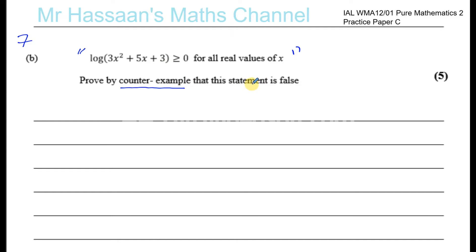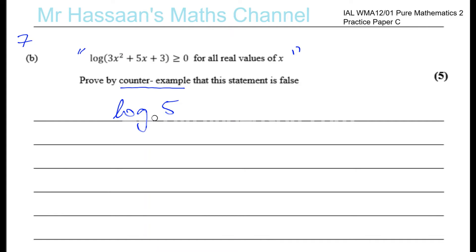In order to do this question, we need to understand something about logarithms. When you have log of something, like log 5, it means log to the base 10 of 5. When you have log to the base 10, you don't need to write the 10. So there is a base there, which is 10.